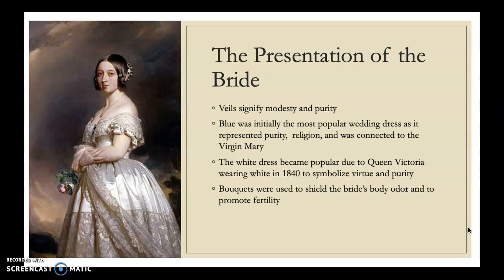So the presentation of the bride. Veils signify modesty and purity. The veil was initially used to keep evil spirits at bay and was typically black. It was also used to hide the bride's face during an arranged marriage so that the male wouldn't leave beforehand upon seeing her. Not seeing each other before the wedding also originated from arranged marriages.